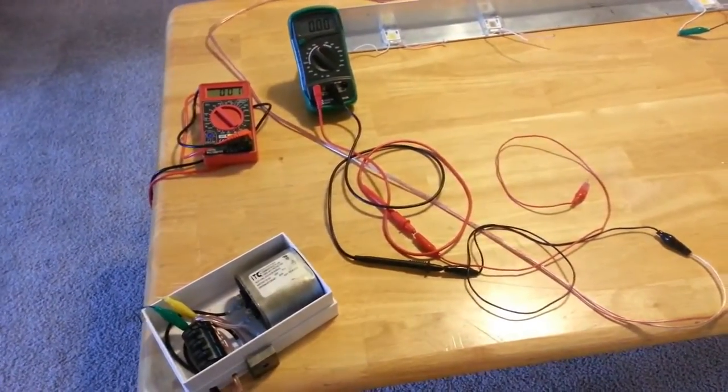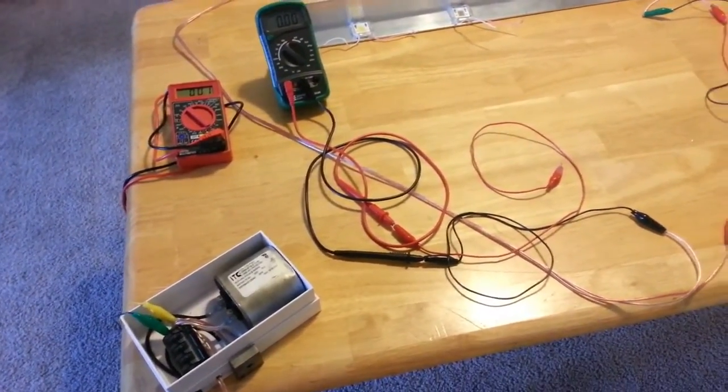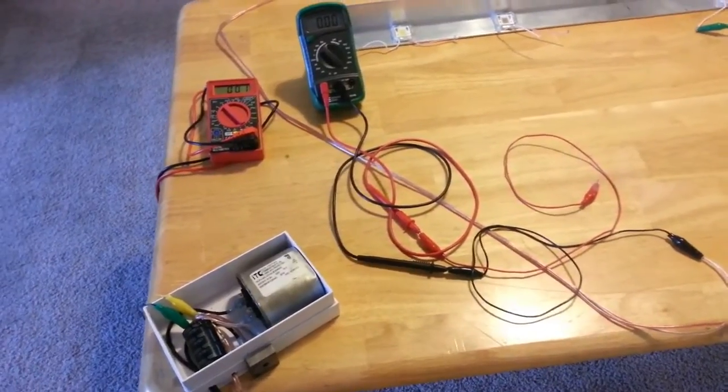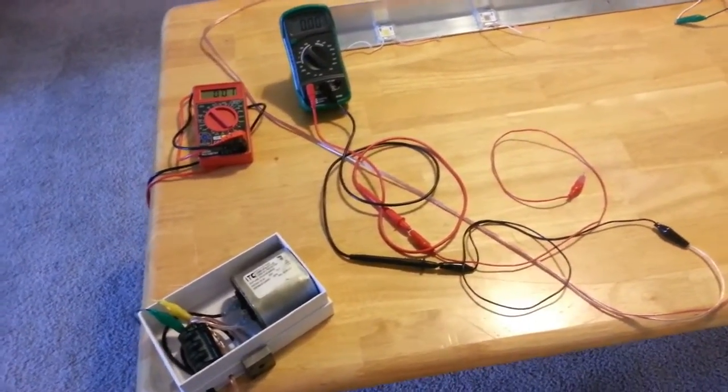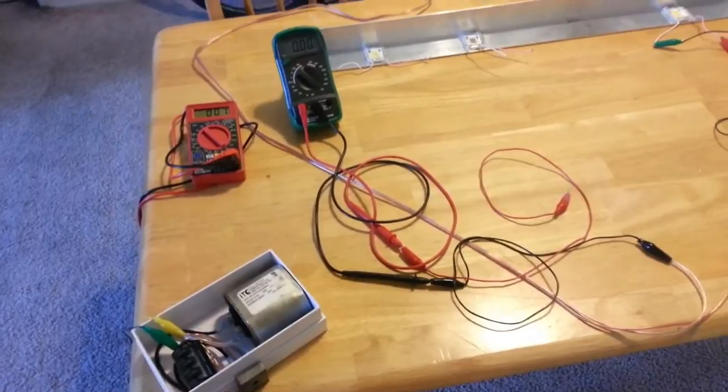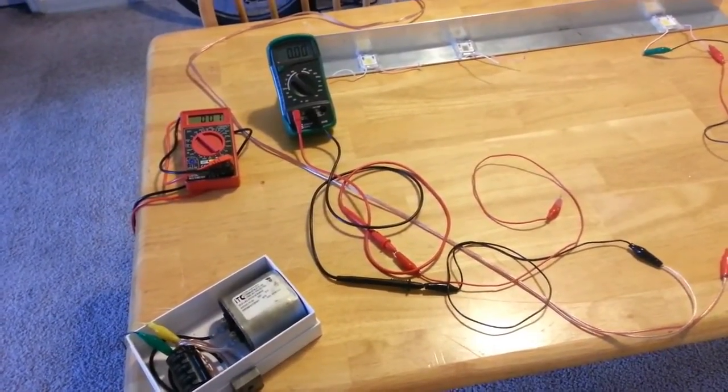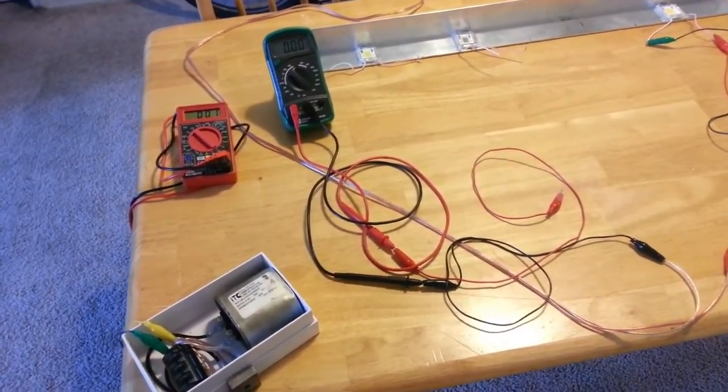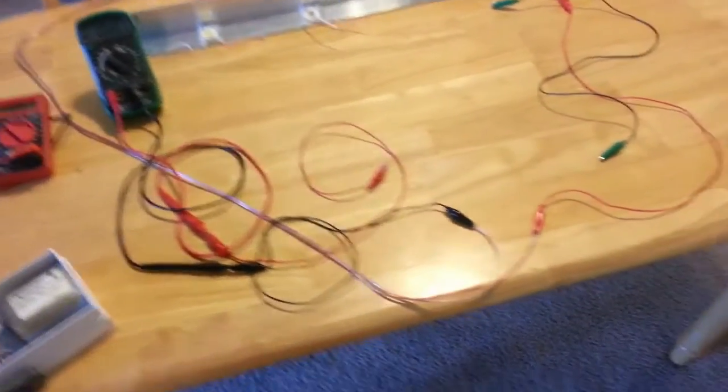If you had two golf carts, you could make a larger charger. If the golf carts are 36 and 36 volt, you can wire them in series to charge. It will charge them. If you have a 48 volt golf cart and a 36 volt, you can wire those in series and it will charge both of them.